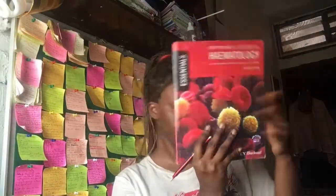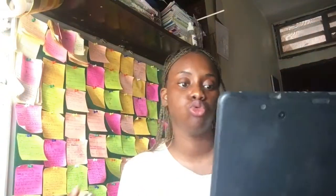For chemical pathology, we use Martin Crookes. I have it in hard copy and soft copy — the soft copy is handy when I'm on the go and need something quickly. For hematology — which covers blood and immunity — I use Hoffbrand's Hematology.